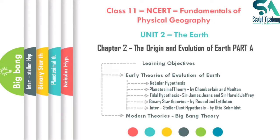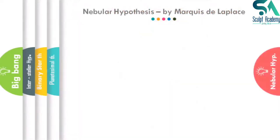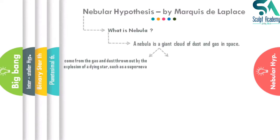Without wasting time, let's begin with the first hypothesis - the Nebular Hypothesis. Before going into it, one must know what a nebula is. A nebula is a giant cloud of dust and gas in space. A nebula is born out of two processes: the first is a supernova, which is an explosion caused by the collapsing of a dying star.